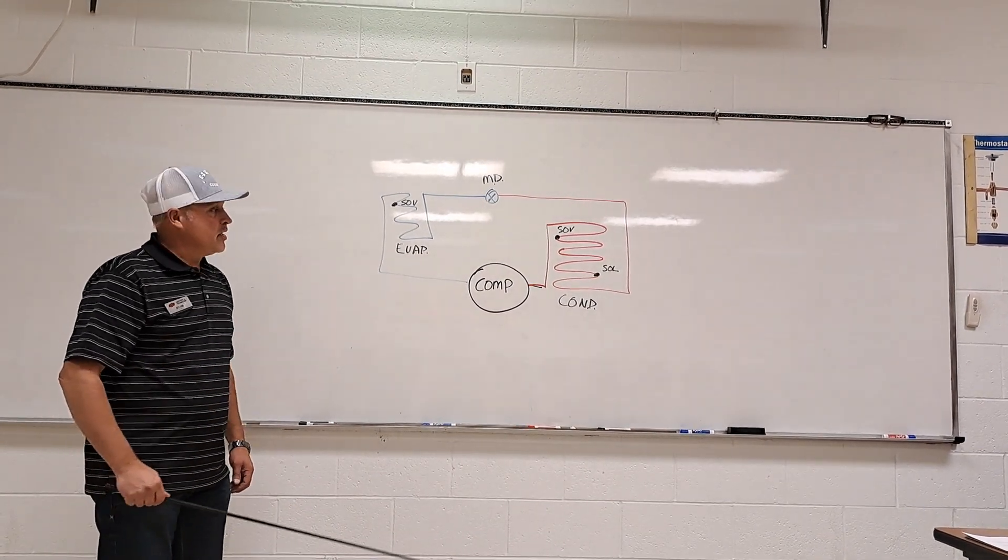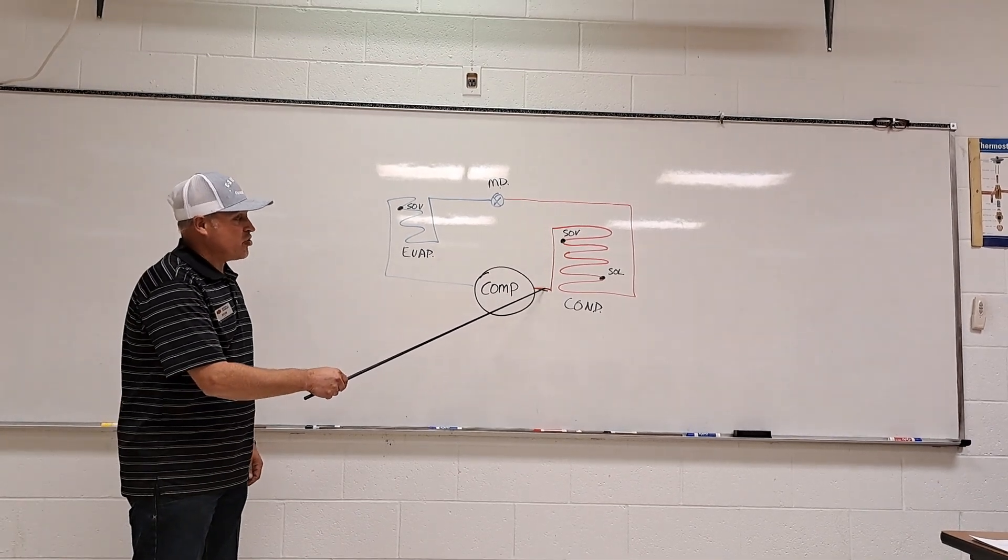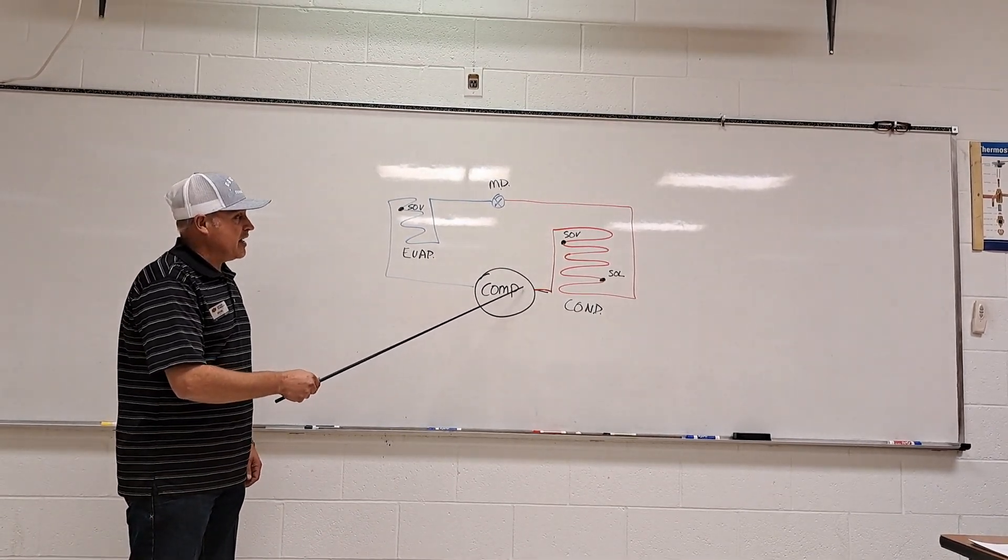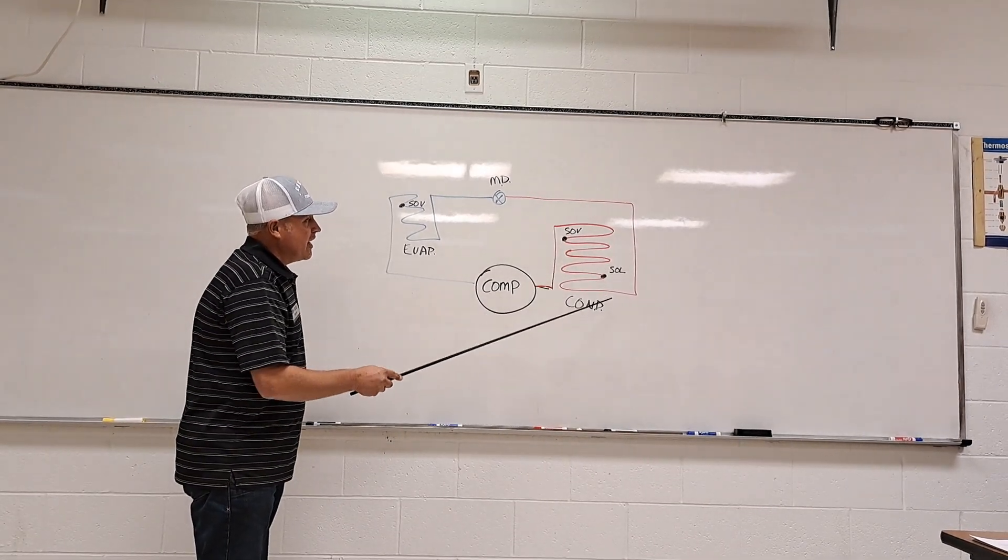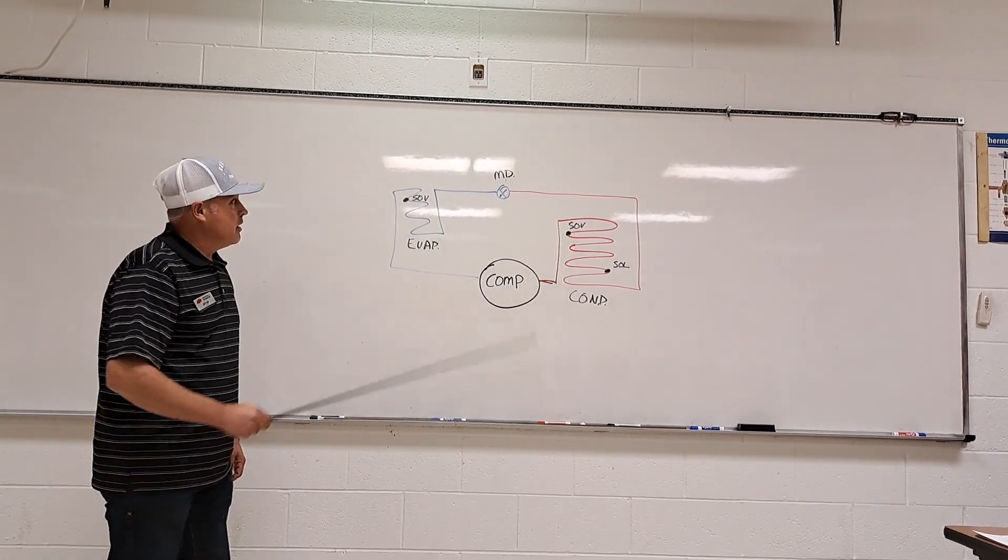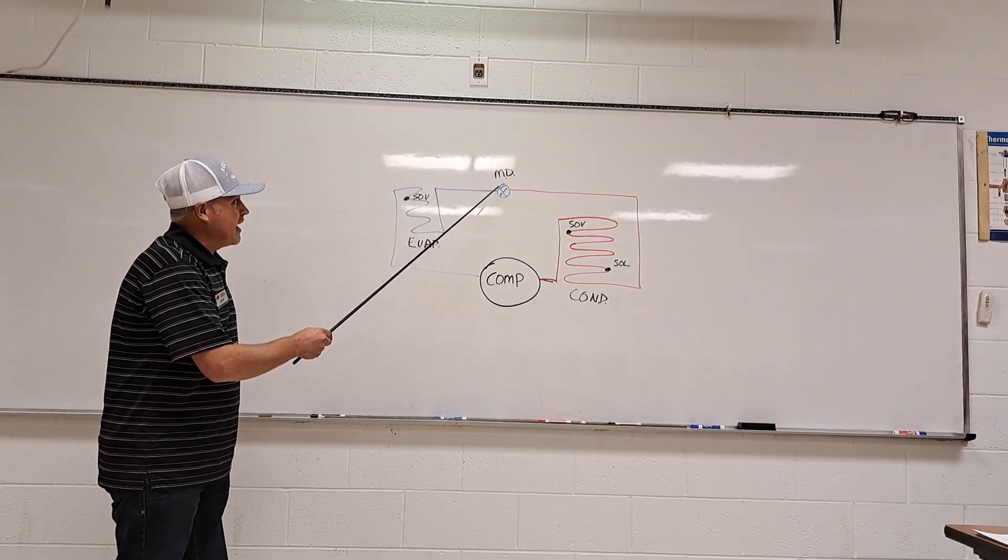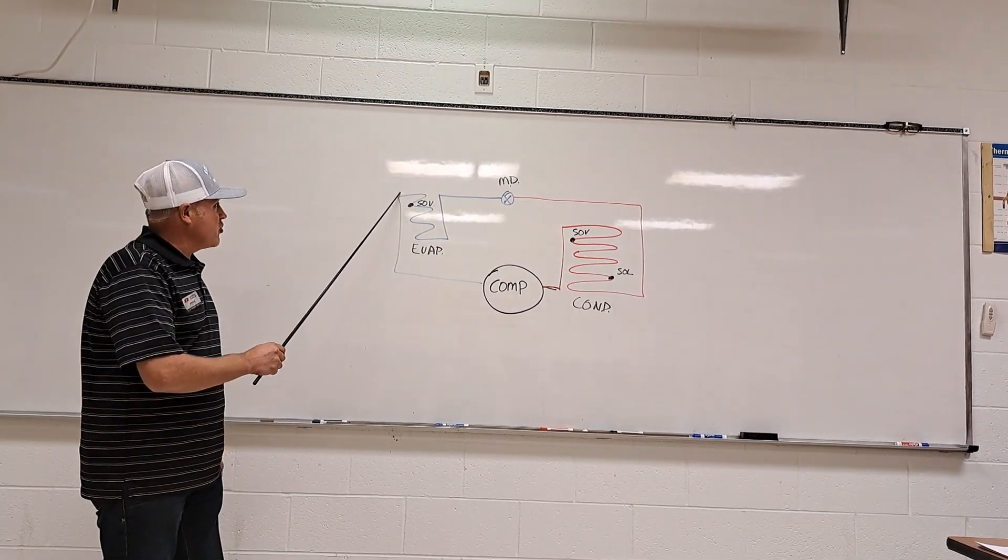The major lines that we have: the discharge line connects the compressor to the condenser, the liquid line connects the condenser to the metering device, the expansion line connects the metering device to the evaporator, and the suction line connects the evaporator to the compressor.